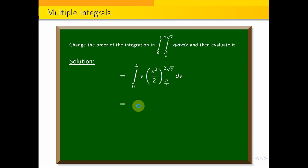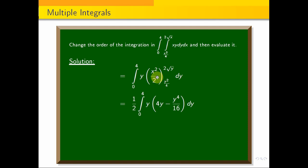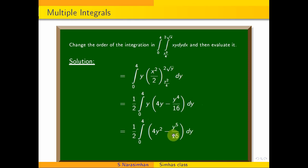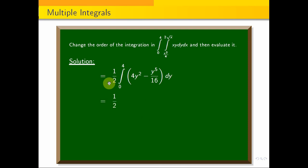Integral 0 to 4 of y — substituting the upper limit: x equals 2 root y gives x squared equals 4y, so we get 4y. Substituting the lower limit: x equals y squared by 4 gives x squared equal to y to the power 4 by 16. So we have integral 0 to 4 of (4y minus y to the power 5 by 16) dy. Integrating: 4y cubed by 3 minus y to the power 6 by 96, with limit 0 to 4.